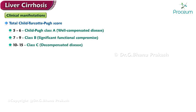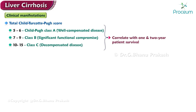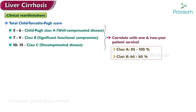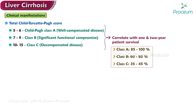These classes correlate with one- and two-year patient survival. For Class A, the survival rate is 85 to 100 percent; for Class B, 60 to 80 percent; and for Class C, 35 to 45 percent.